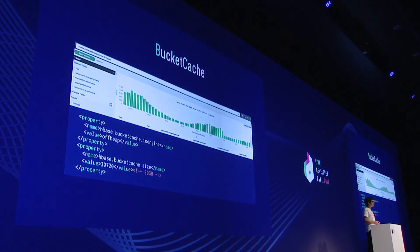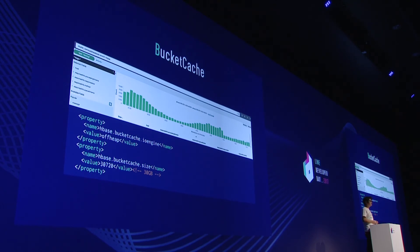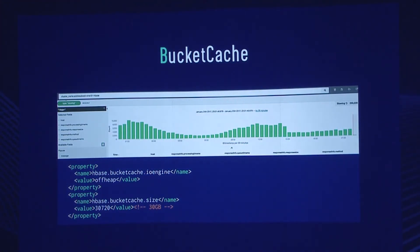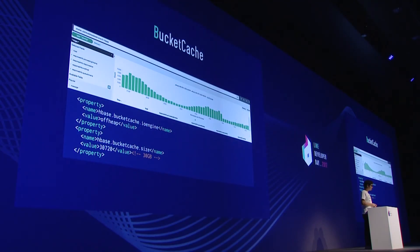First is the bucket cache. HBase, when it reads the data, doesn't read from disk directly — it stores some data in memory cache. Back in 0.9, this was kept in the JVM heap. In that case, when cache eviction happens, it affects performance. But if you use the bucket cache, the cache can be held in the off-heap area where it doesn't affect performance. This graph shows the count of slow logs. By enabling this feature, we were able to reduce the slow log count by half.